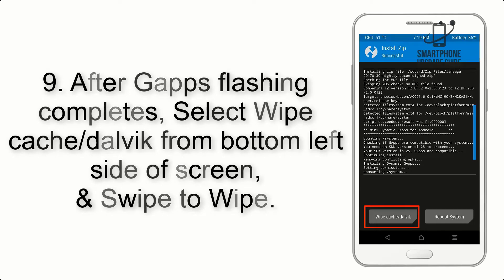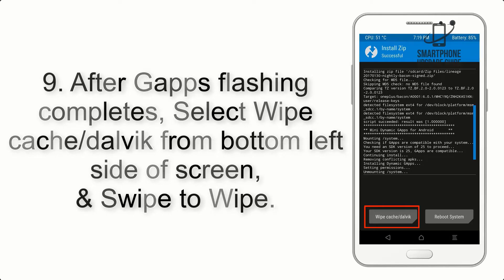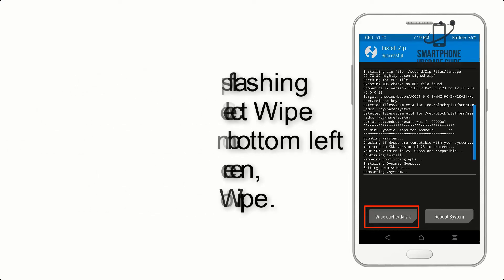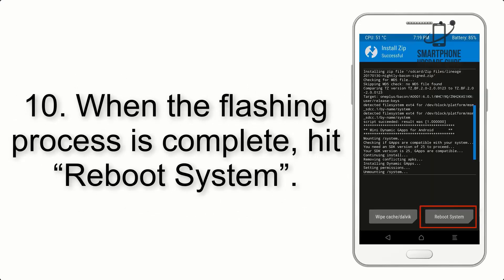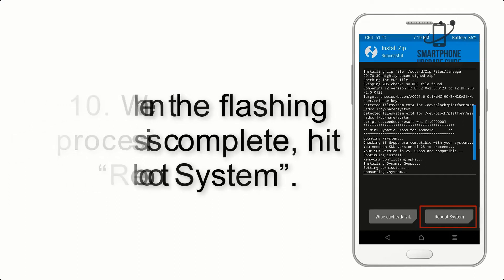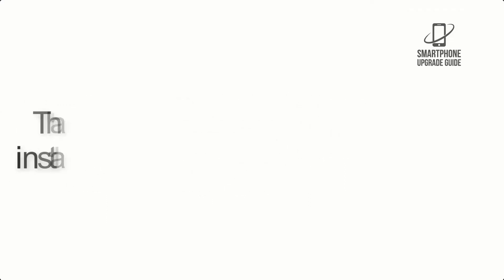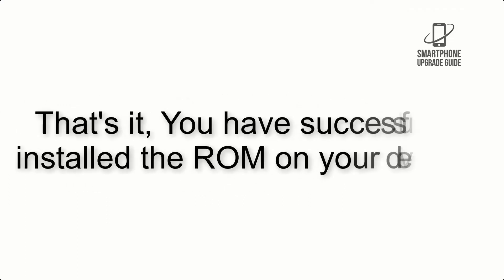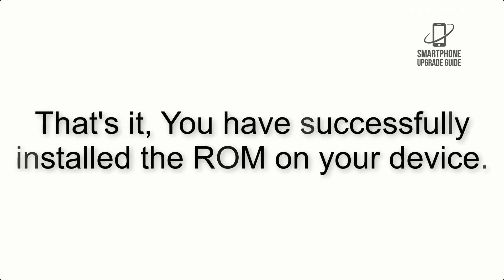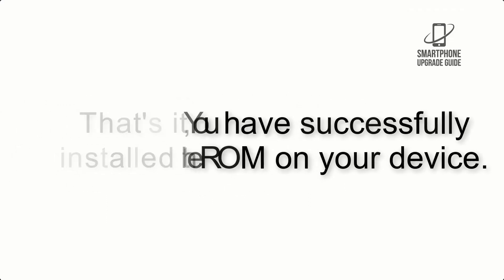Step 9: After GApps flashing completes, select Wipe Cache and Dalvik from the bottom left side of the screen and swipe to wipe. Step 10: When the flashing process is complete, hit Reboot System. That's it — you have successfully installed the ROM on your device.